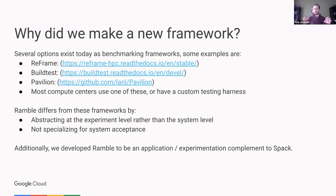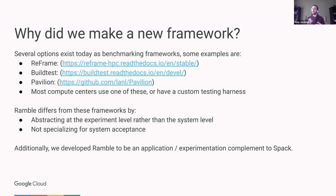I didn't write this at all with systems acceptance in mind initially. This was more like: I want to see a scaling study that differs on one platform versus another — like Cascade Lake and Milan as an example. They have different ranks per node that you would want to run, and you want to tweak those parameters and run the same general experiment on both of them quickly.